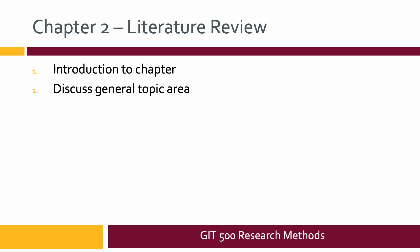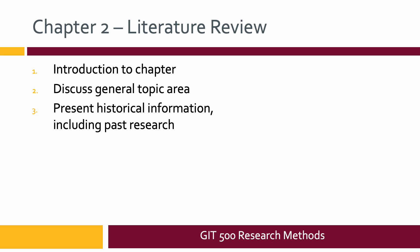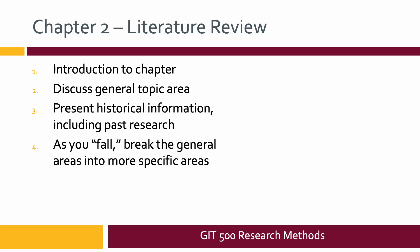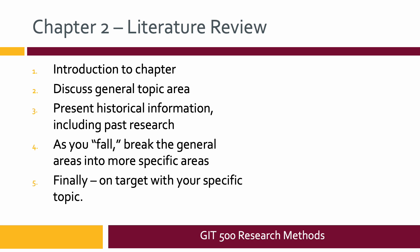You first jump out and have a very broad view — that's where you want to start. Discuss the general topic area without getting to specifics, presenting historical information and including past research. As you fall, you see the target better but with fewer things around it — that's when you break the big general area into more specific areas closer to your topic. Finally you land on your target, which is your specific topic. You start very broad and whittle it down to your specific topic area. That's how you write a literature review. Don't forget the summary.